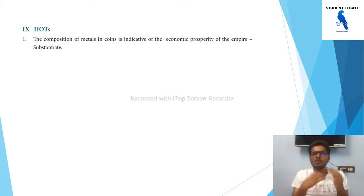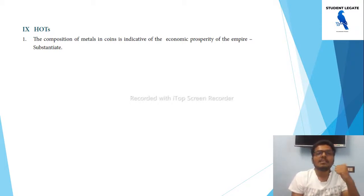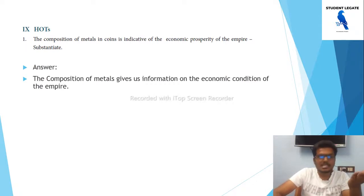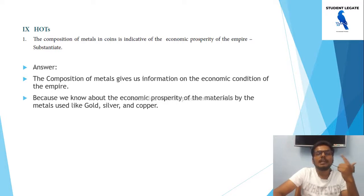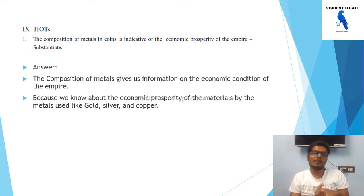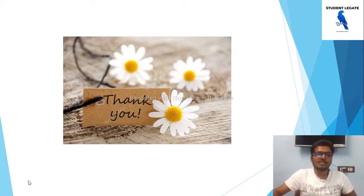The compilation of metal coins indicates the economic prosperity and sustainability of the empire. The coins composed of metal give information about the economic condition of the empire — we can know about the economic prosperity by the metal used, like gold, silver, and copper. This is the end of the video; please like, share, and subscribe. Thank you.